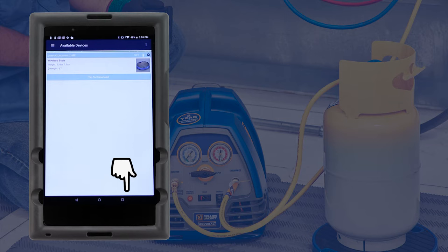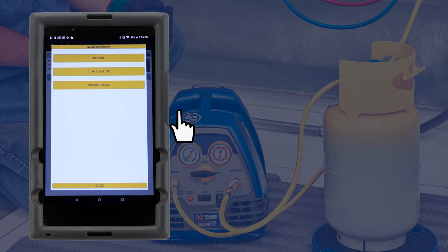Click on the gear icon above the scale image. From this screen you can tear or zero the scale, turn off the scale, or recalibrate the scale if the factory calibration is compromised. With the recovery cylinder placed on the scale, we're ready to begin recovery of this system and tear the scale.